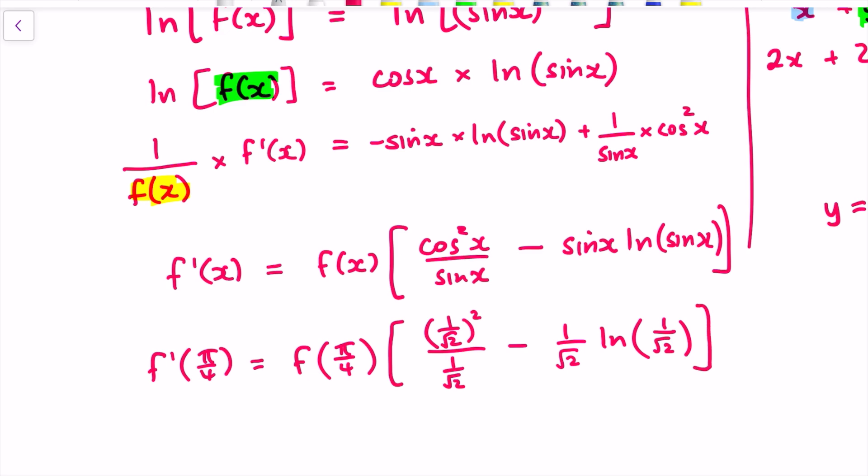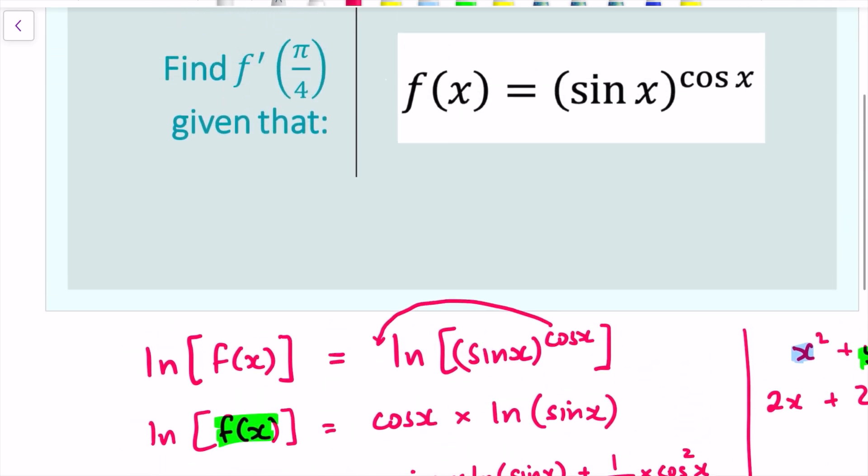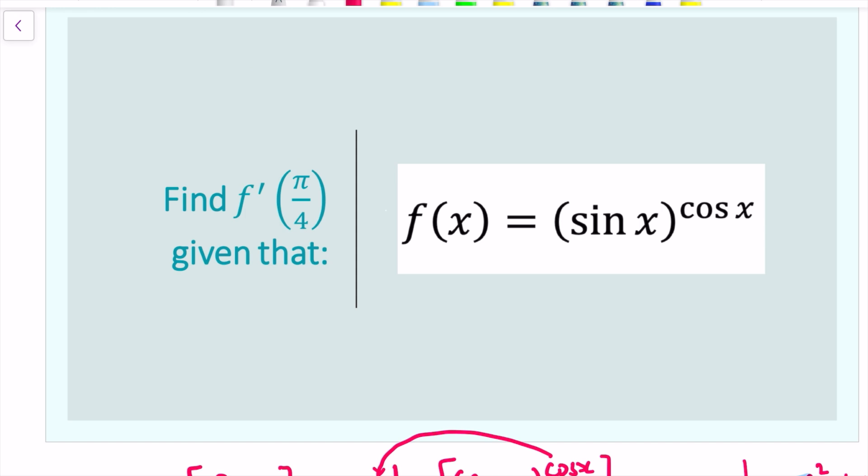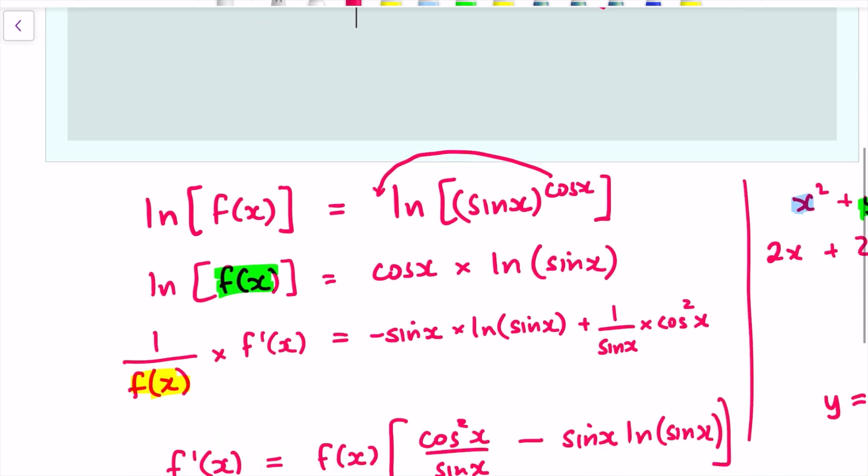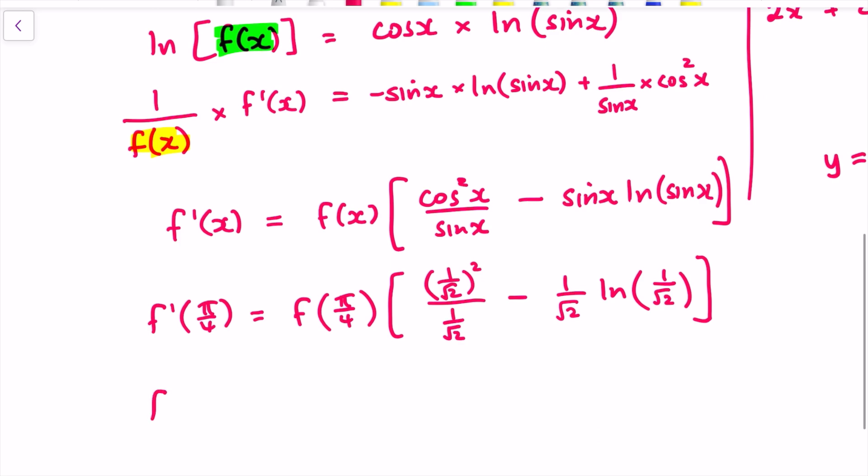And lastly f of pi over 4 so we go back to the original function for that, f of pi over 4 is 1 over root 2 to the power of 1 over root 2. Okay so that can go into here f dash of pi over 4 equals 1 over root 2 all to the power of 1 over root 2